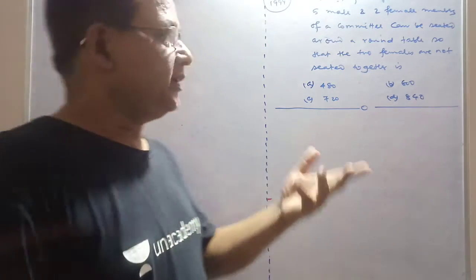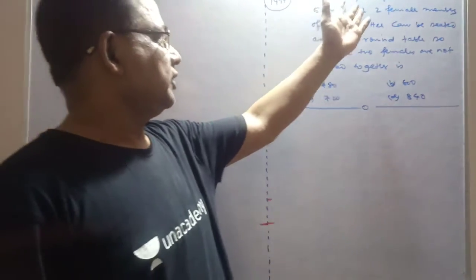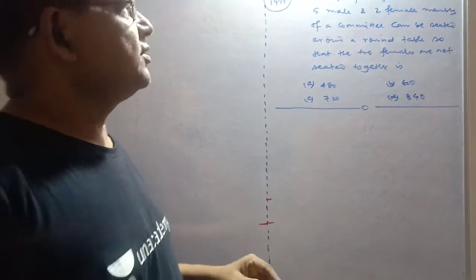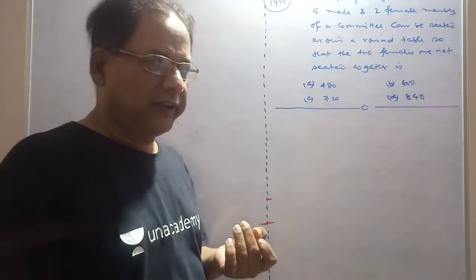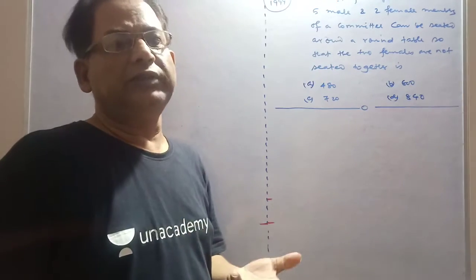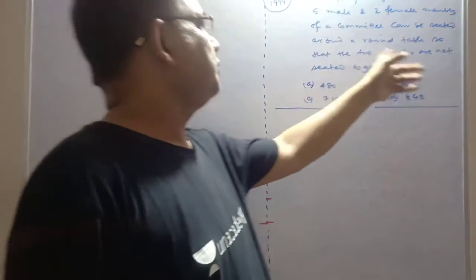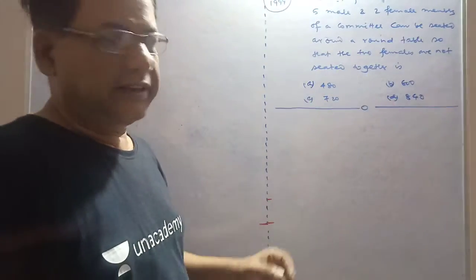Hello, good evening. My dear friends, your problem is: the number of ways in which five men and two females can be seated in a round table so that the two females should not sit together.